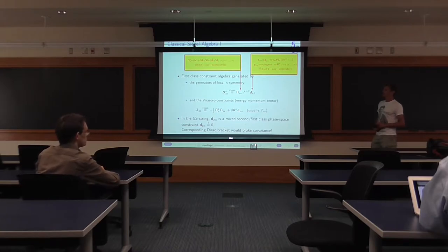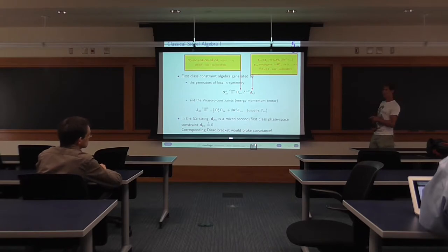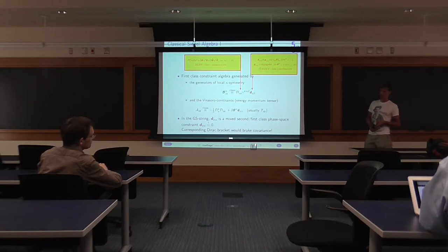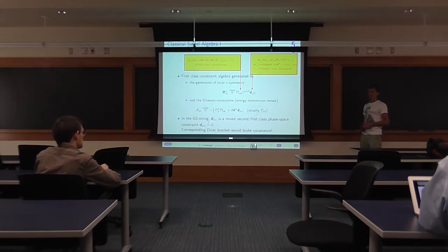So the idea is that we calculate the first-class algebra without imposing this constraint — so we are not imposing d equals zero — but we just look at those constraints where we know they are purely first class. B and A are purely first class because they generate the gauge transformations. And then see what algebra we get. What's the maximum subalgebra of SO(10) that you can preserve while solving the stream? There is a U(5) that appears also in the pure-spinor approach where one has a constraint on the ghost, and in order to solve that one goes to U(5) variables.